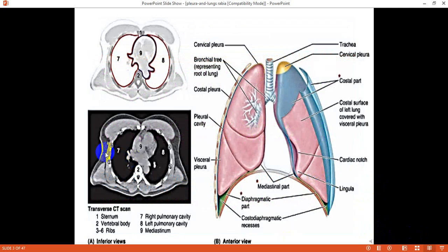The thoracic cavity, as we can observe here in the CT scan as a cross-section, is a kidney-shaped cavity. The central part of the cavity is occupied by heart and the pericardial sac, while the lateral parts are covered by the lungs and pleural cavities.